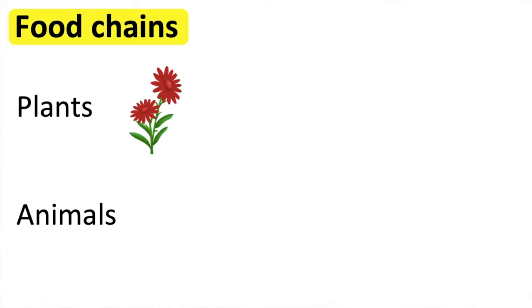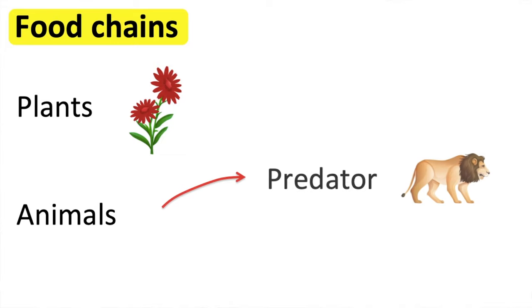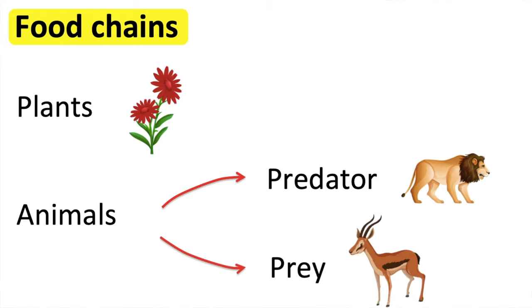An animal that eats another animal is called a predator. The animal they eat is called prey. So, predators eat prey.